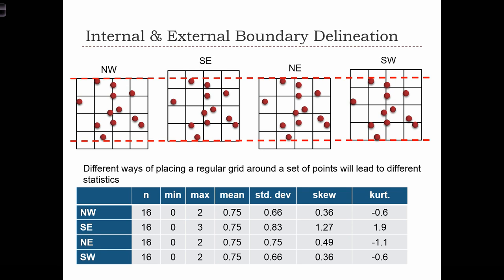We can begin by thinking about where we should place the 4x4 grid. Assuming the size of the grid cell is already predetermined, we can place the grid such that it matches with the westernmost and northwesternmost point. If we count how many cholera outbreaks there are in each grid cell, we get this table of descriptive statistics. There are 16 grid cells, the minimum is 0, the maximum is 2, so the range is 2. The mean is 0.75, because there are 12 cholera outbreaks and 16 grid cells, so the mean will always be 12 over 16.